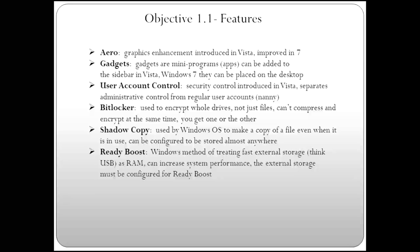With the introduction of Vista, we also got Shadow Copy. Shadow Copy is used in Windows to make a copy of what you're working on on the fly — when you're working on a Word document, it makes an exact duplicate and stores it off to the side in case your system goes down. You can configure Shadow Copy to store that copy on a separate partition, an external hard drive, or a USB drive.